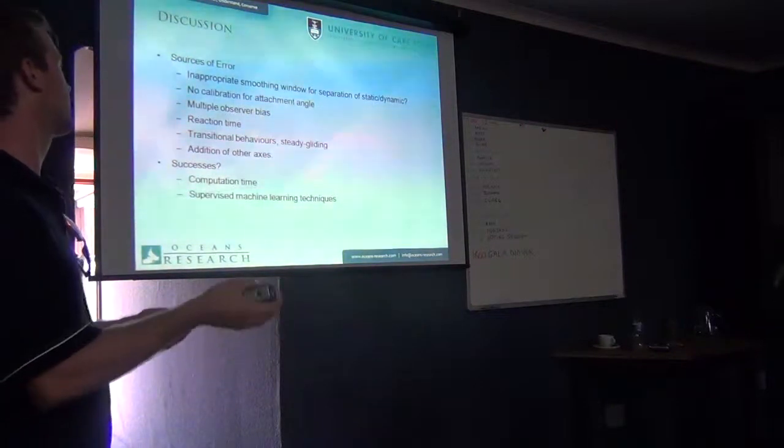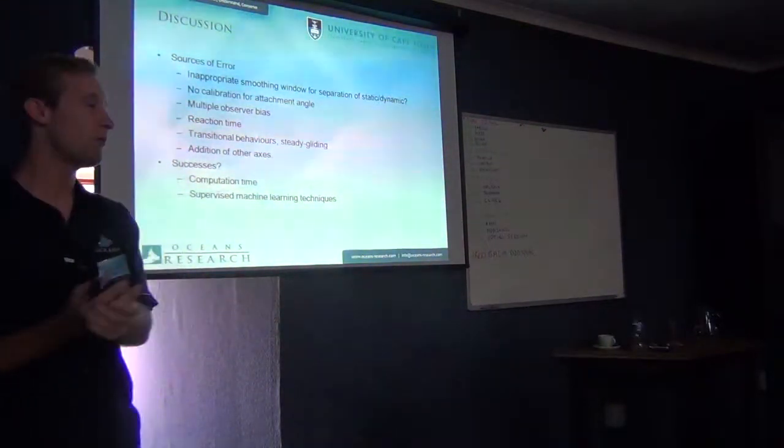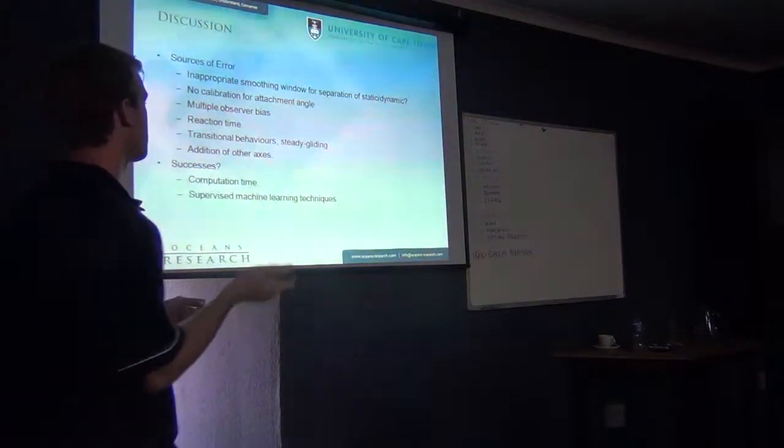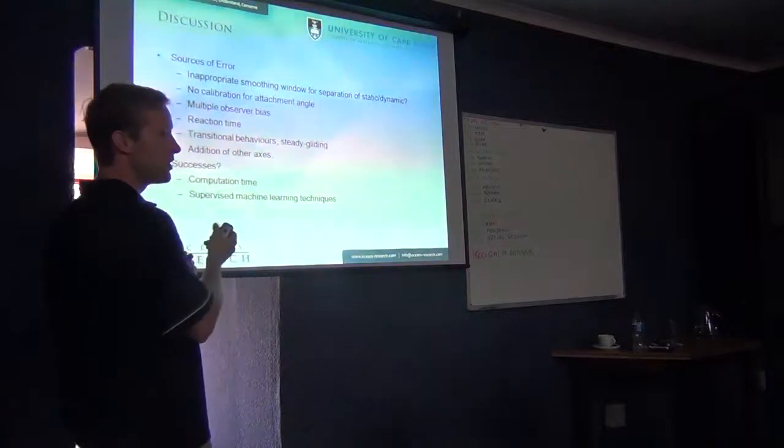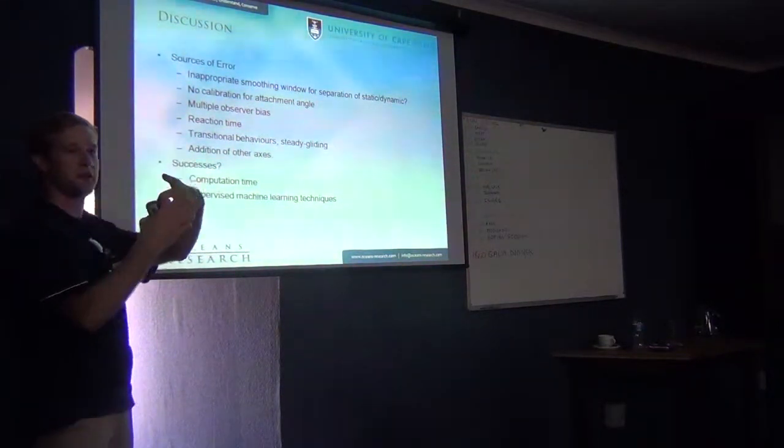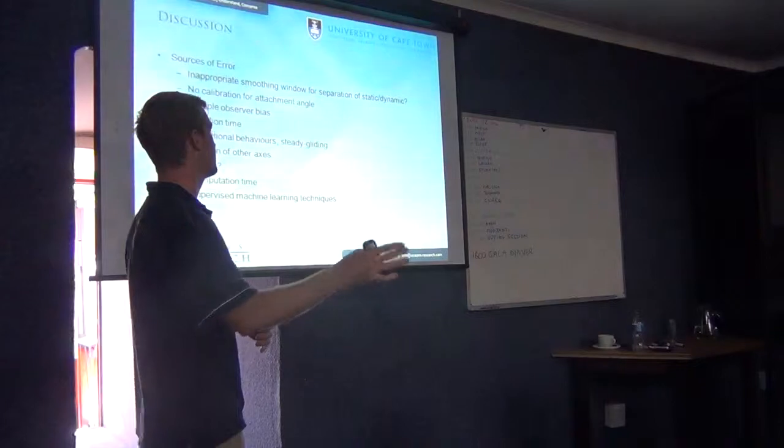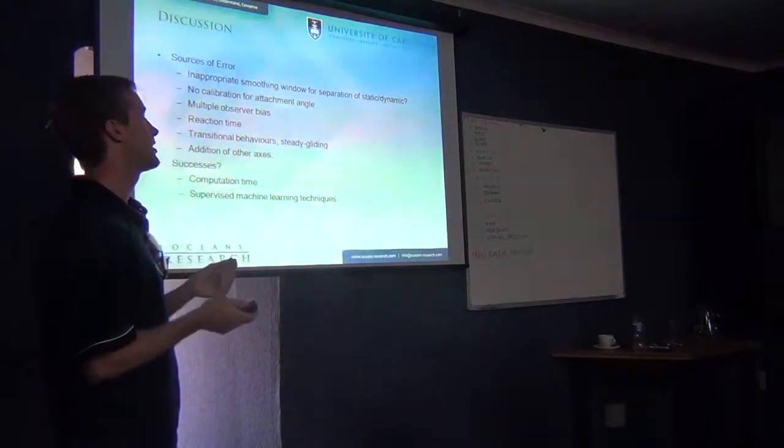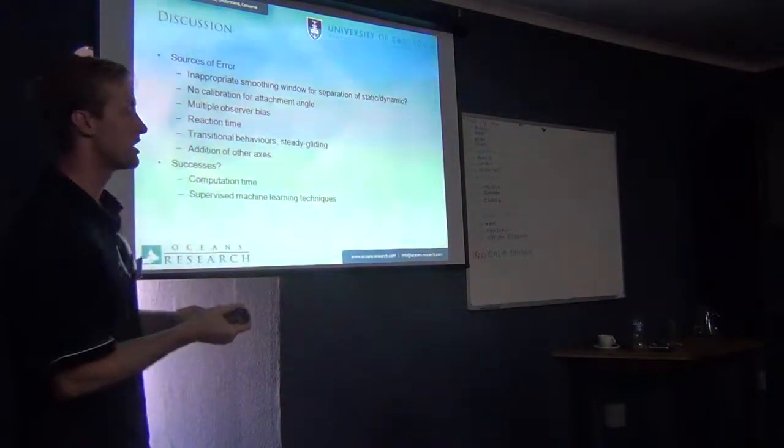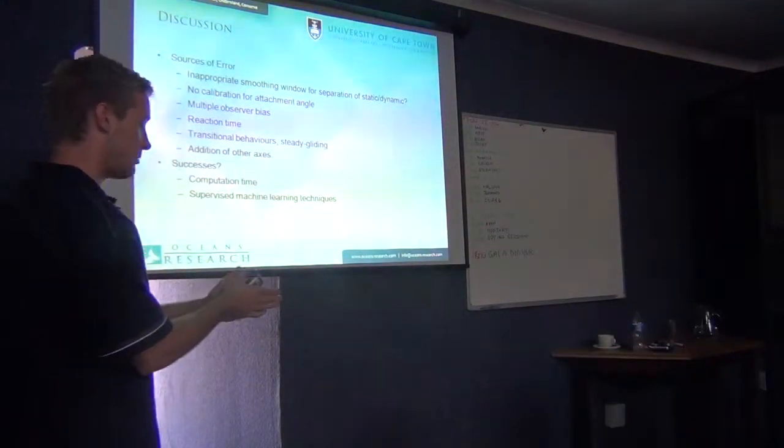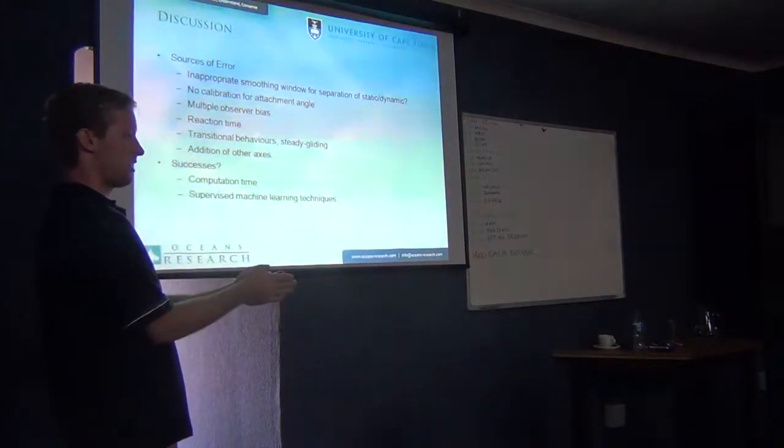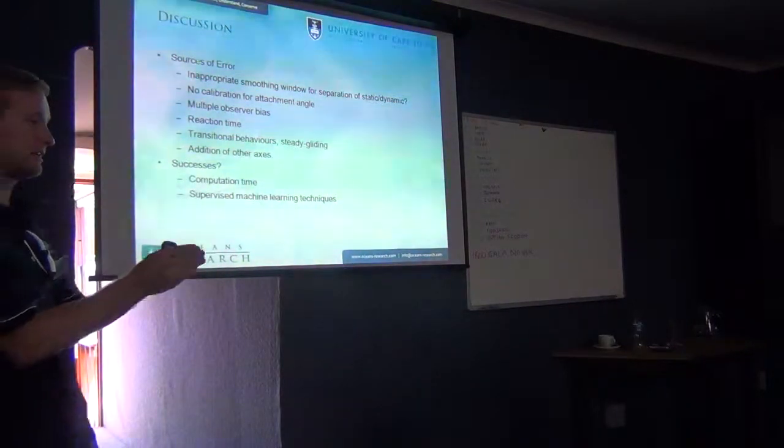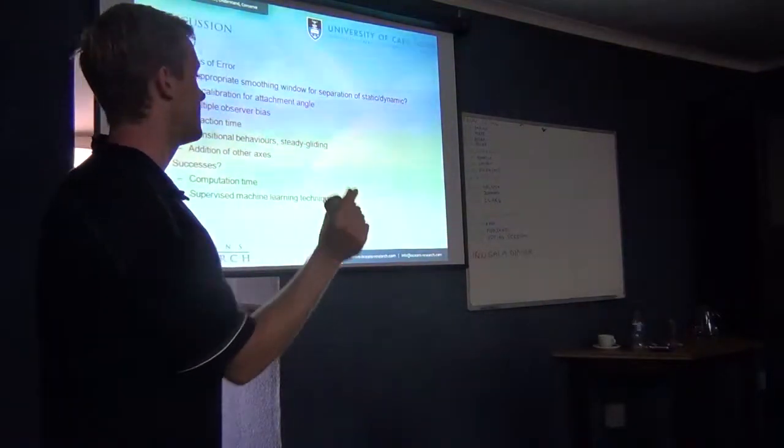So, what went so horribly wrong? Or maybe not too horribly, but why didn't this work? I think a few people have sort of touched on some of these elements in their presentation. But the first one is that smoothing window that I spoke about. Where we separate the gravitational acceleration from the dynamic movement of the tail acceleration. I just arbitrarily, not necessarily arbitrarily, but I used some previous methods where they had said, for an animal that has a cycle length of about three seconds, or less than three seconds, you can use three seconds as an appropriate window. Ideally, you would want to tune that to your animal very specifically.